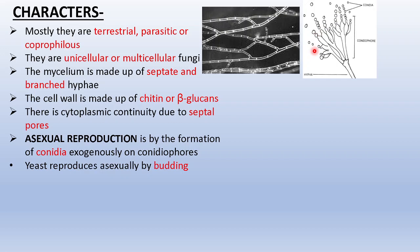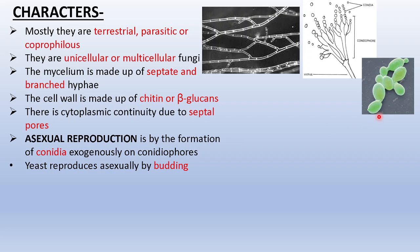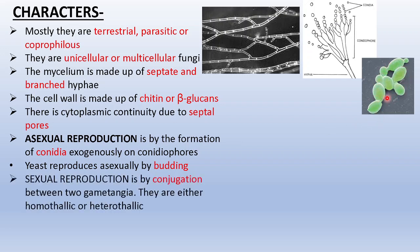An example of a unicellular form is yeast, or Saccharomyces. It reproduces asexually by budding. Sexual reproduction is by conjugation between two gametangia. They are either homothallic or heterothallic.